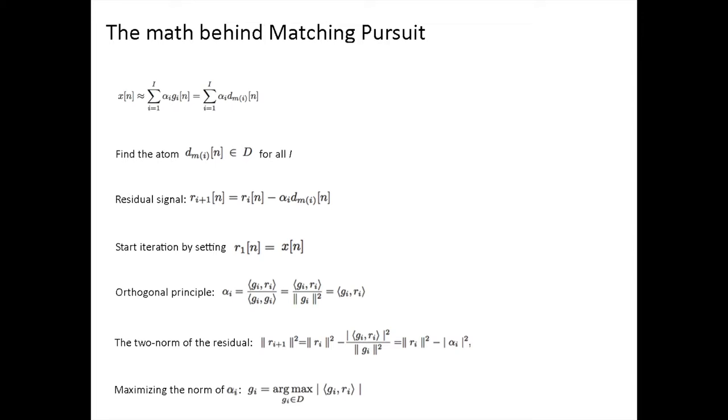In more basic terms, we are finding the atom whose inner product with the signal has the largest magnitude. The atom is then subtracted from the residual.